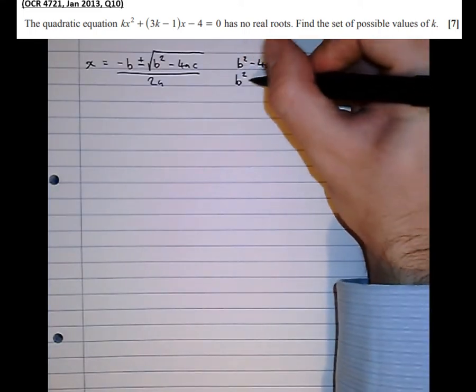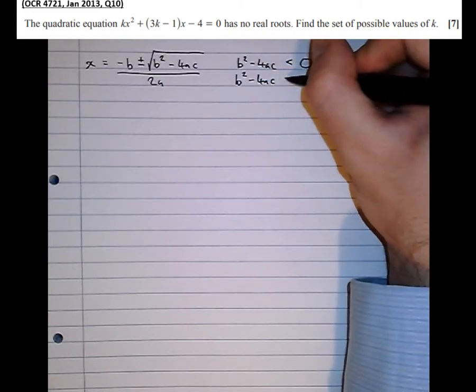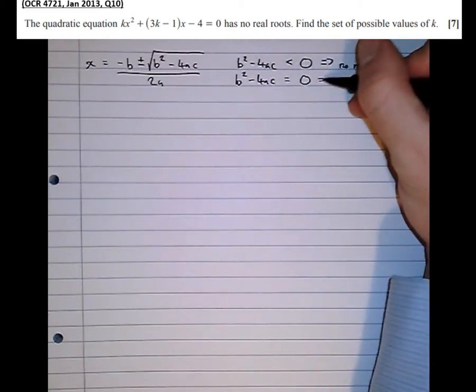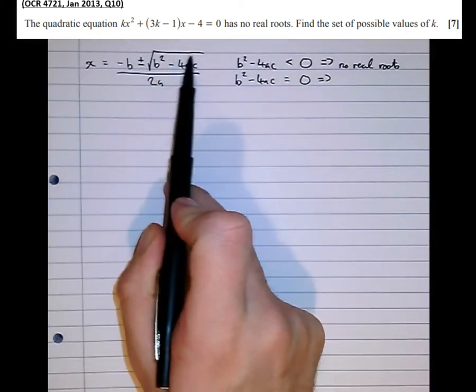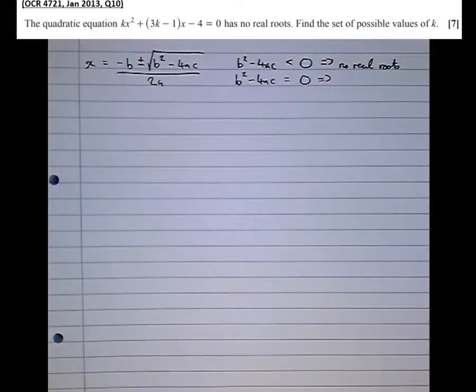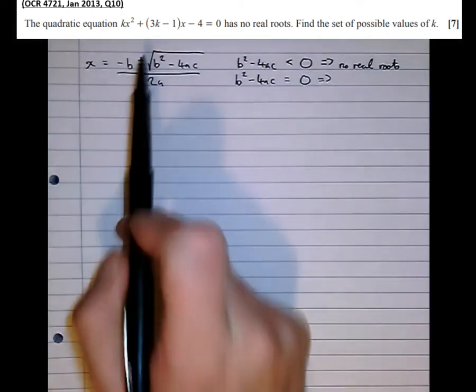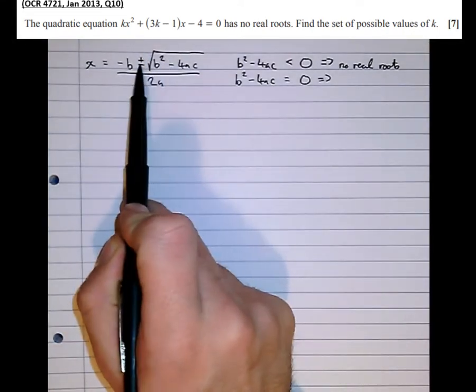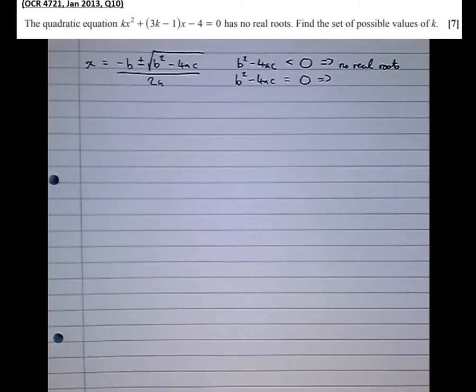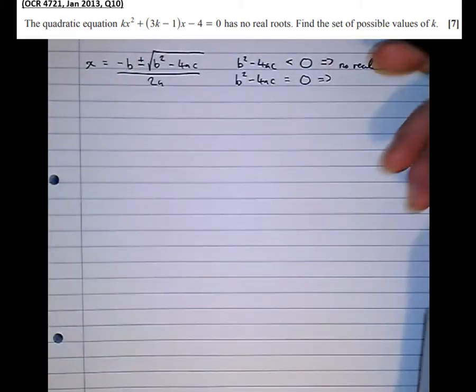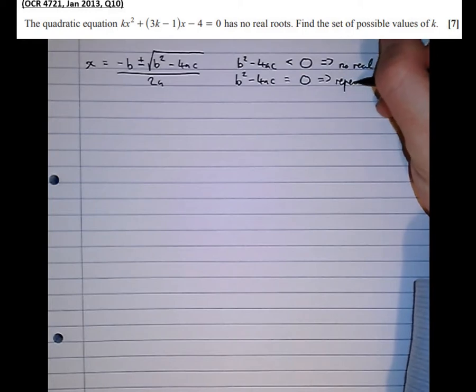Another situation that can arise is b squared minus 4ac equal to zero. Now let's think about what that means. If zero is what's under the square root sign, we're rooting zero which gives us zero so we're adding zero and taking zero away. Well that has no effect on a number. So both roots are going to be the same. So repeated roots.